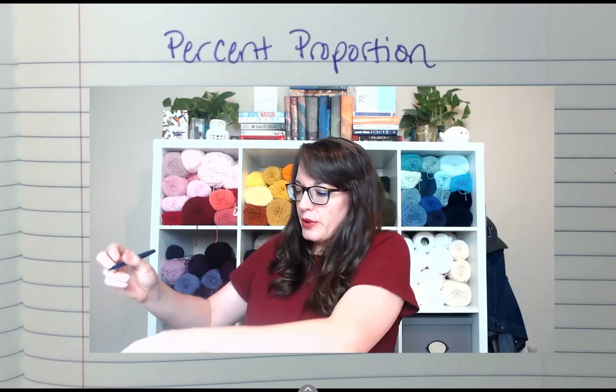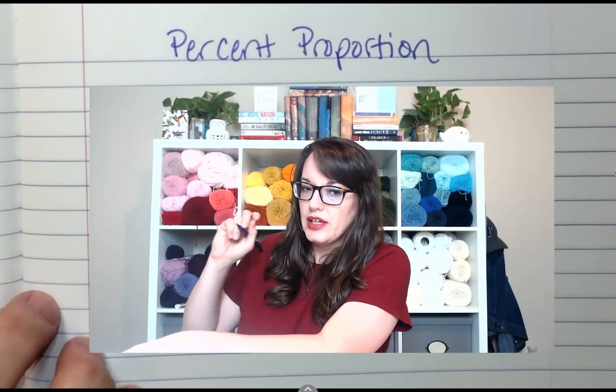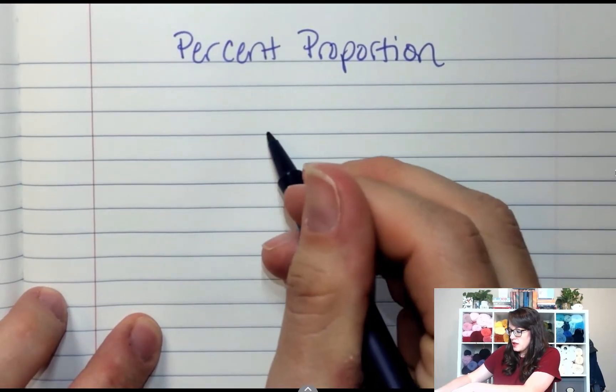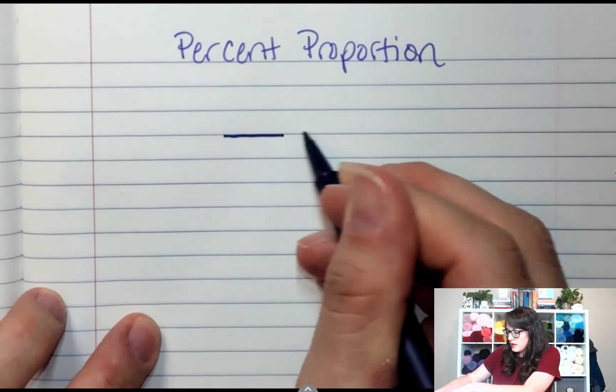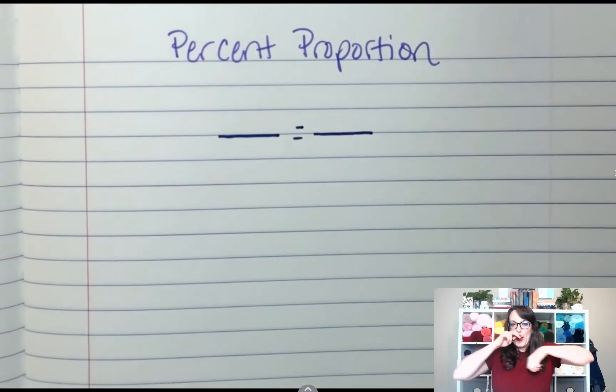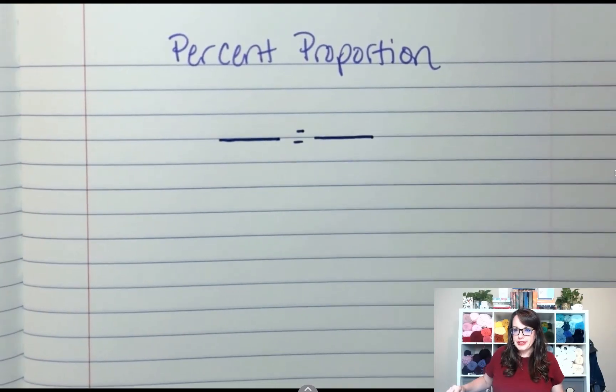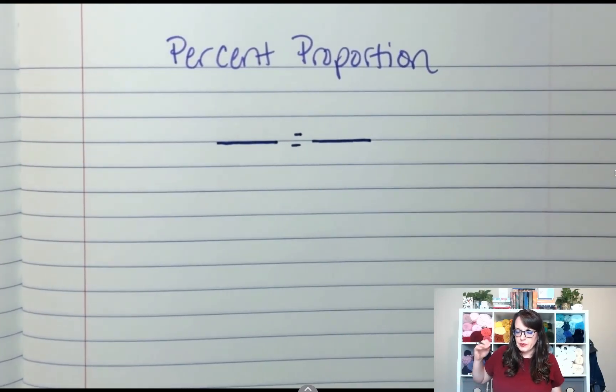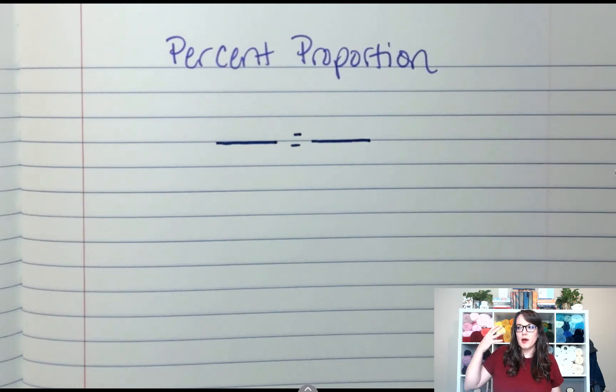We know that a proportion is two equivalent ratios. So if I draw my proportion like so, and now percent. When we talk about percents, we're talking about a part to a total.